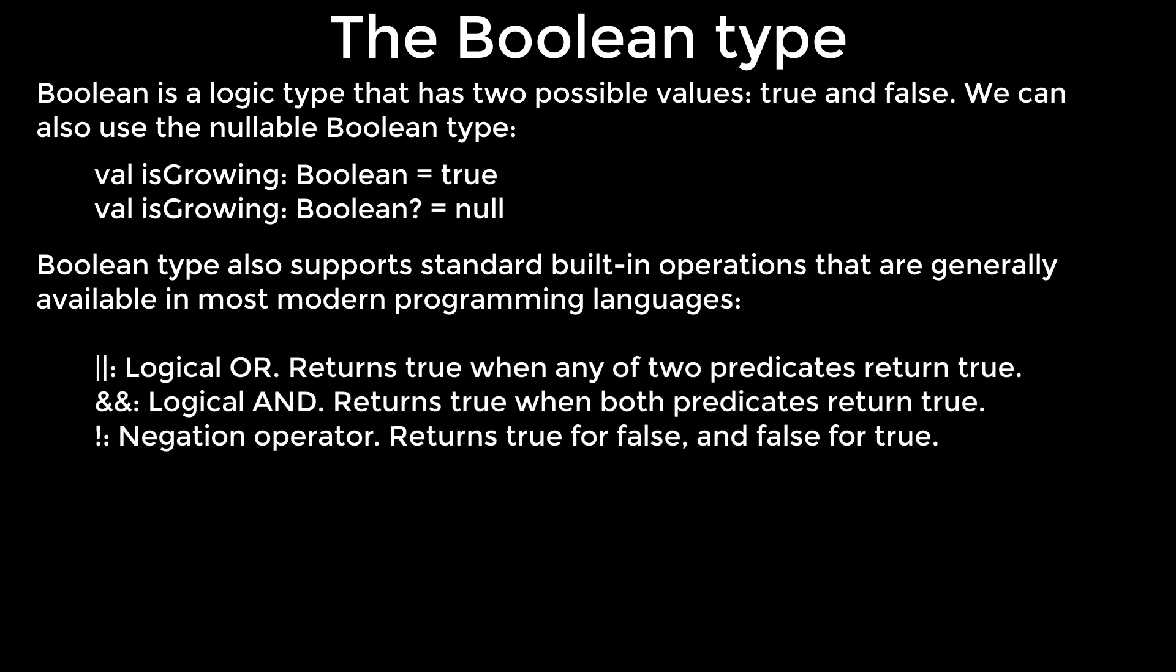Logical OR returns true when any of two predicates return true. Logical AND returns true when both predicates return true. Negation operator returns true for false and false for true. Keep in mind that we can only use not-null Boolean for any type of condition.